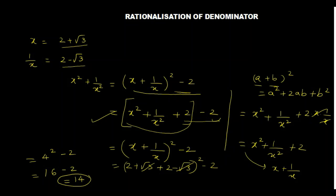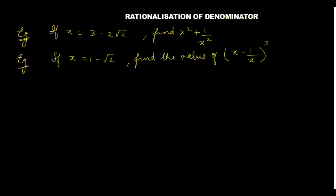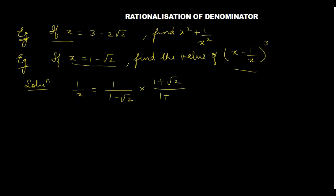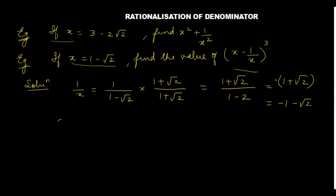Let's do the next question — the same type of example. This question is: x is equal to 1 minus root 2, and we have to find the whole cube of x minus 1 by x. We will find 1 by x the same way. We write 1 over 1 minus root 2, multiply by 1 plus root 2 over 1 plus root 2 to rationalize. The denominator becomes 1 squared minus root 2 squared, which is 1 minus 2 equals minus 1. So 1 by x equals minus 1 plus root 2, or written as minus 1 minus root 2 in brackets.